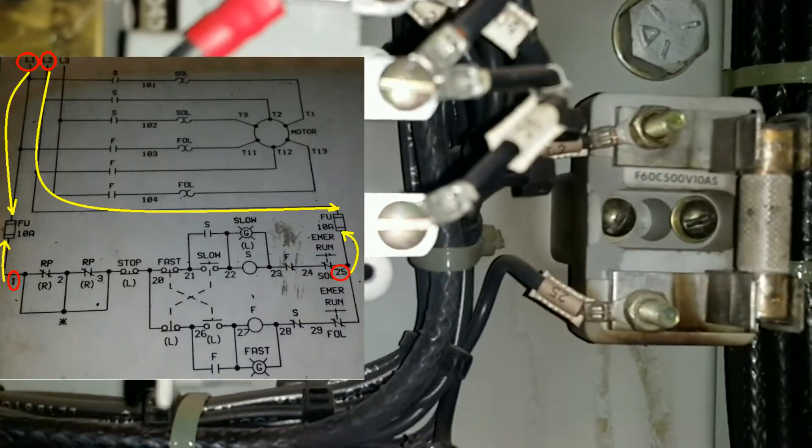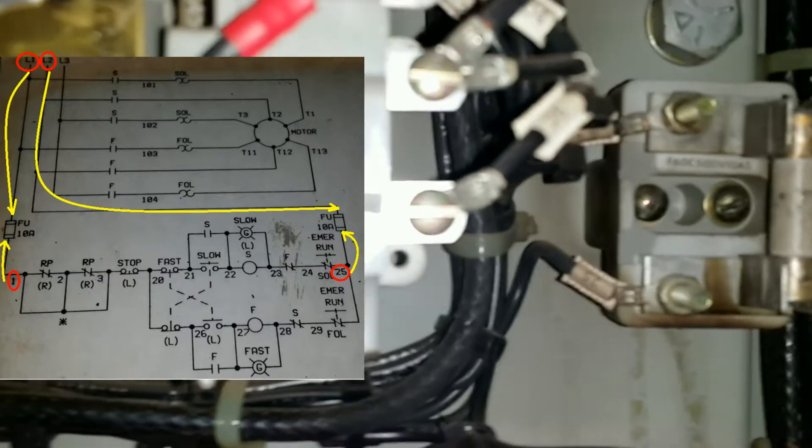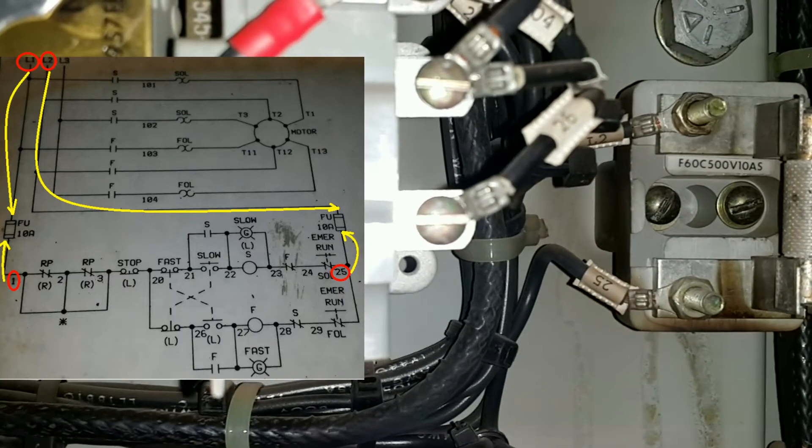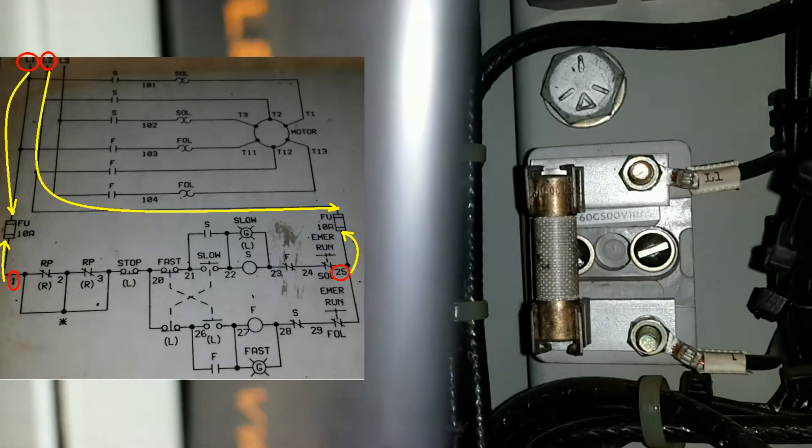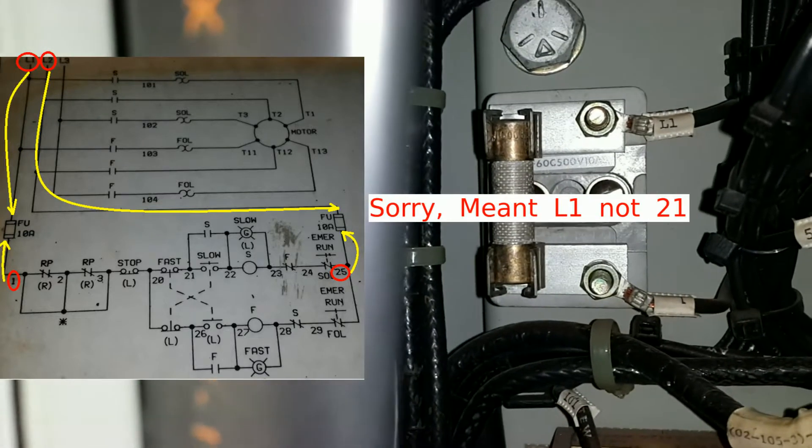We still got our fuses, now they're just in a different location. We got L2 giving power to 0.25 just as predicted by the schematic, and then in this side we got 21 giving power to cable number one via that fuse.